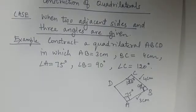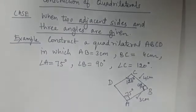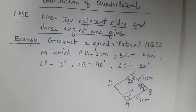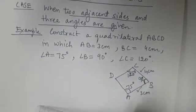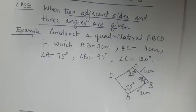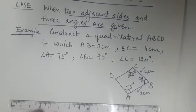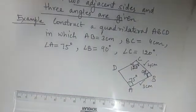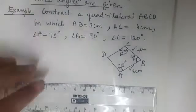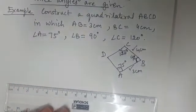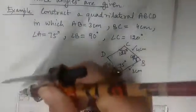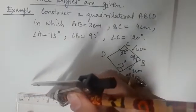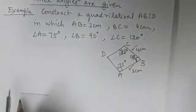So we will begin by first drawing the line segment AB. AB is given to be 3 centimeters, so let us draw this. Using the given dimensions, we are going to construct the quadrilateral ABCD. This is how we have first drawn AB — AB is 3 centimeters.